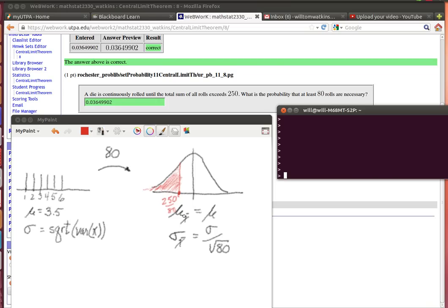The mean of the distribution of sample means is going to have the same as the mean of the original population. And the standard deviation of the sample means is going to be the standard deviation of the original population divided by the square root of n.